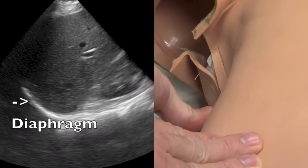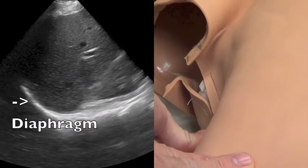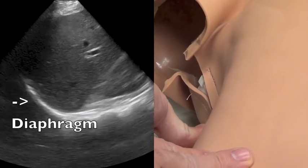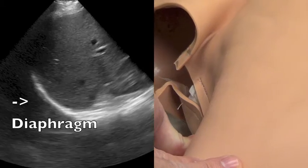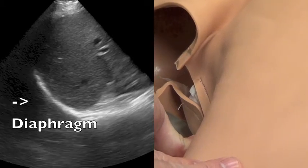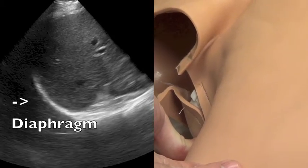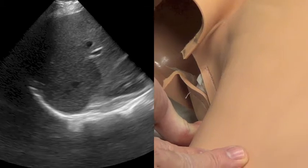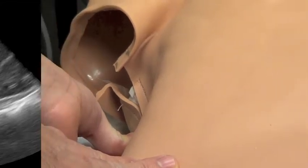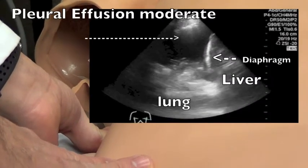You will actually be able to see the apposition of the hepatic silhouette with the diaphragm by ultrasonography. And just superior to that, we should be able to identify the effusion.